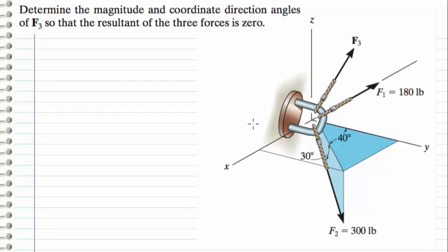So here we've got a 3D statics problem request. We're given this force F2 with two angles and the force F1, and we're trying to find the magnitude of the force F3 and the direction that it points.